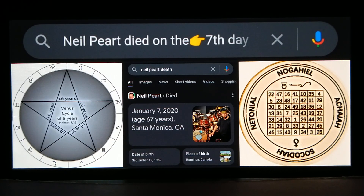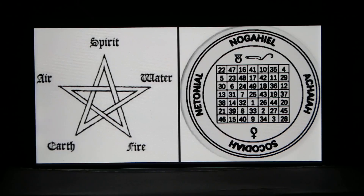Off to the left we have a five-pointed star — the pentagram representing the Venus pentagram. Eventually there will be a playlist tying this all together. I'm trying to do some short videos to keep it less complicated and easier to understand.